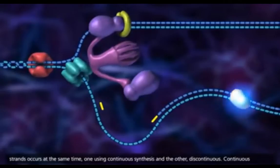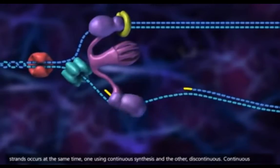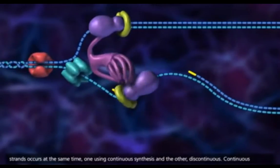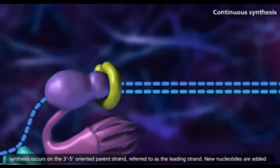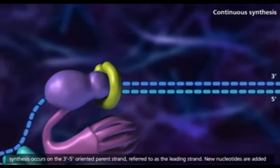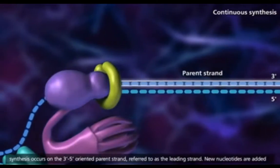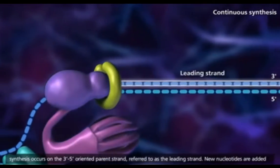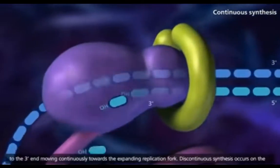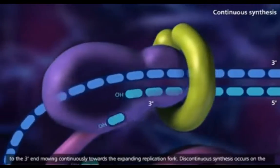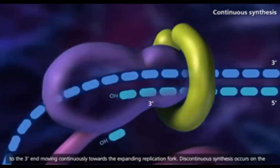Replication of both strands occurs at the same time, one using continuous synthesis and the other discontinuous. Continuous synthesis occurs on the 3' to 5' oriented parent strand, referred to as the leading strand. New nucleotides are added to the 3' end, moving continuously toward the expanding replication fork.